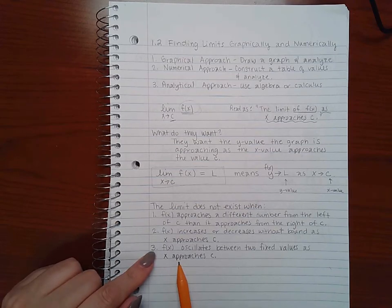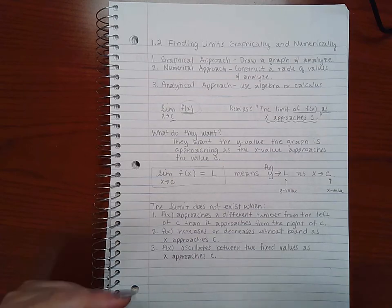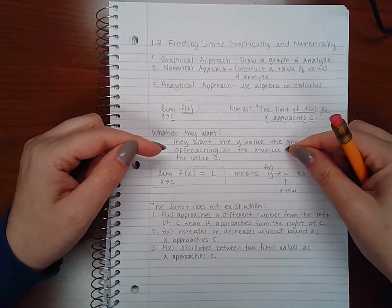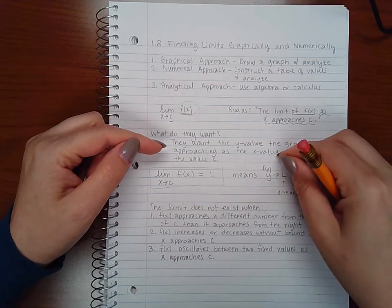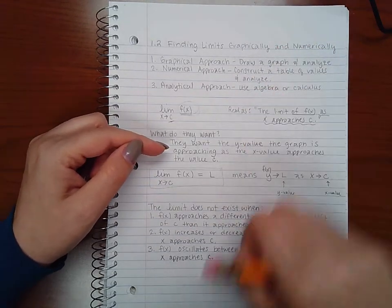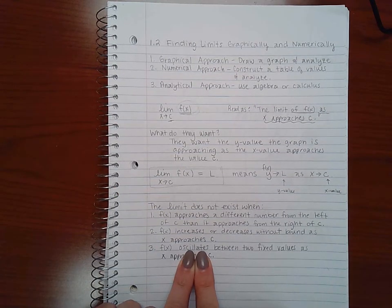And then the third case, which doesn't happen often but it does happen, is if your function oscillates between two values. So if for x equal to one number it's positive one, and then for x equal to the next number it's negative one, and then the next number it's positive one, so it just keeps toggling back and forth between one and negative one - that's what's called oscillation.